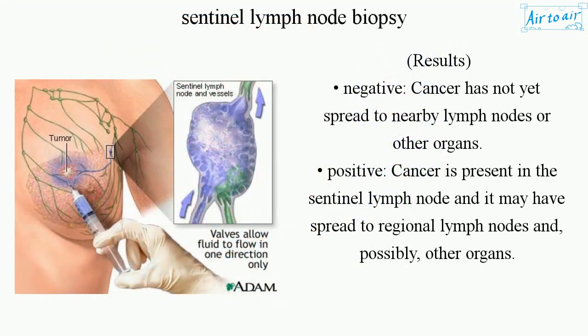Results — Negative: Cancer has not yet spread to nearby lymph nodes or other organs. Positive: Cancer is present in the sentinel lymph node and it may have spread to regional lymph nodes and possibly other organs.